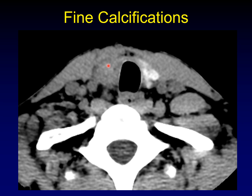Be careful not to mistake some residual thyroid tissue within a mass or encased by a mass for fine calcifications. This is not normal thyroid tissue taking up iodine — this is calcium in a very fine pattern.